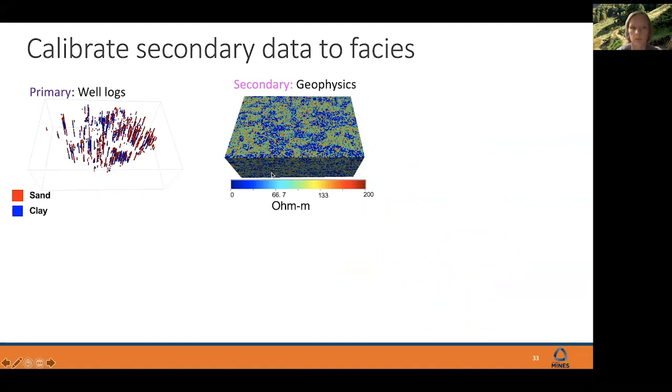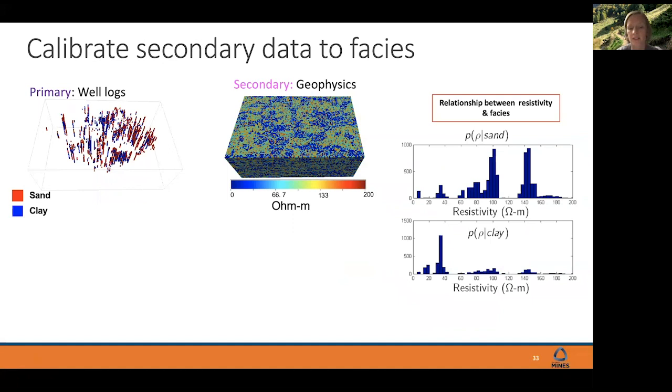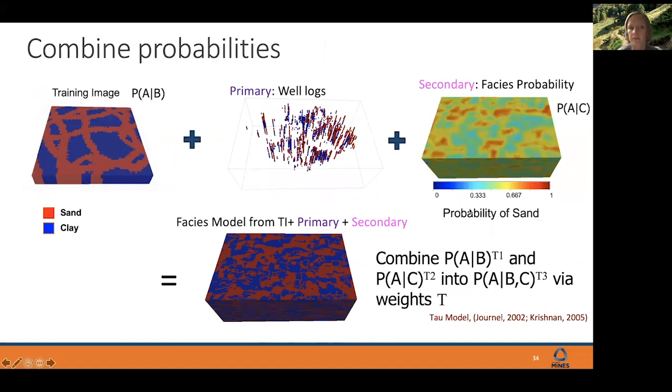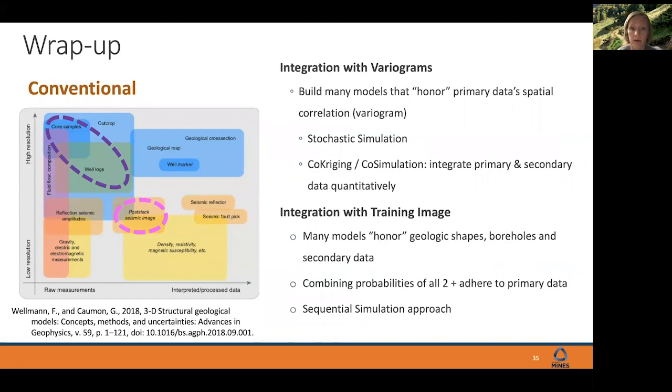SNESIM is just one of the many that are available. First, the algorithm scans the training image with this little green template. While it's scanning, it's capturing all the different shape locations or configurations that it sees in that training image. Then those events are stored in a search tree. We define this data event, and we look around that neighborhood in that central node. We want to search within our search tree and see how frequently that pattern existed.